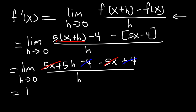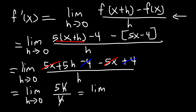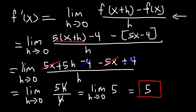So we're left with the limit as h approaches 0 of 5h divided by h. The h terms cancel — h divided by h is 1. The limit as h approaches 0 for a constant like 5, since there's no h in this expression anymore, is simply equal to 5. So that's the derivative of 5x minus 4. It's 5.